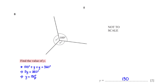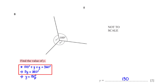Find the value of y. Angles formed around a point add up to 360 degrees, so we have 100 degrees plus y plus y equals 360 degrees. When we group like terms and divide both sides by 2, we get y equals 130 degrees.